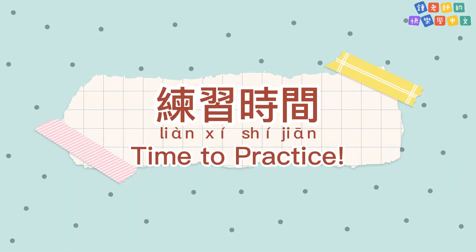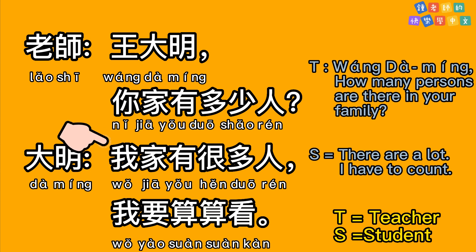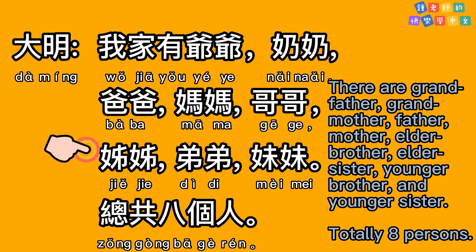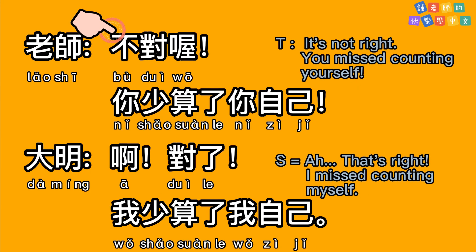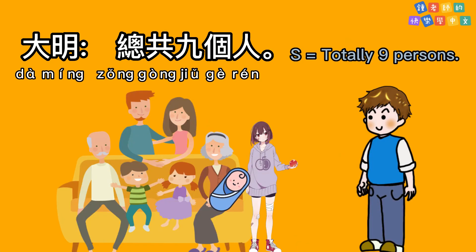Now let's practice together. 让我们一起来练习哦。 王大鸣,你家有多少人? 我家有很多人。我要算算看。我家有爷爷。奶奶。爸爸。妈妈。哥哥。姐姐。弟弟。妹妹。总共八个人。不对哟。你少算了你自己。啊,对了。我少算了我自己。总共九个人。Good job!